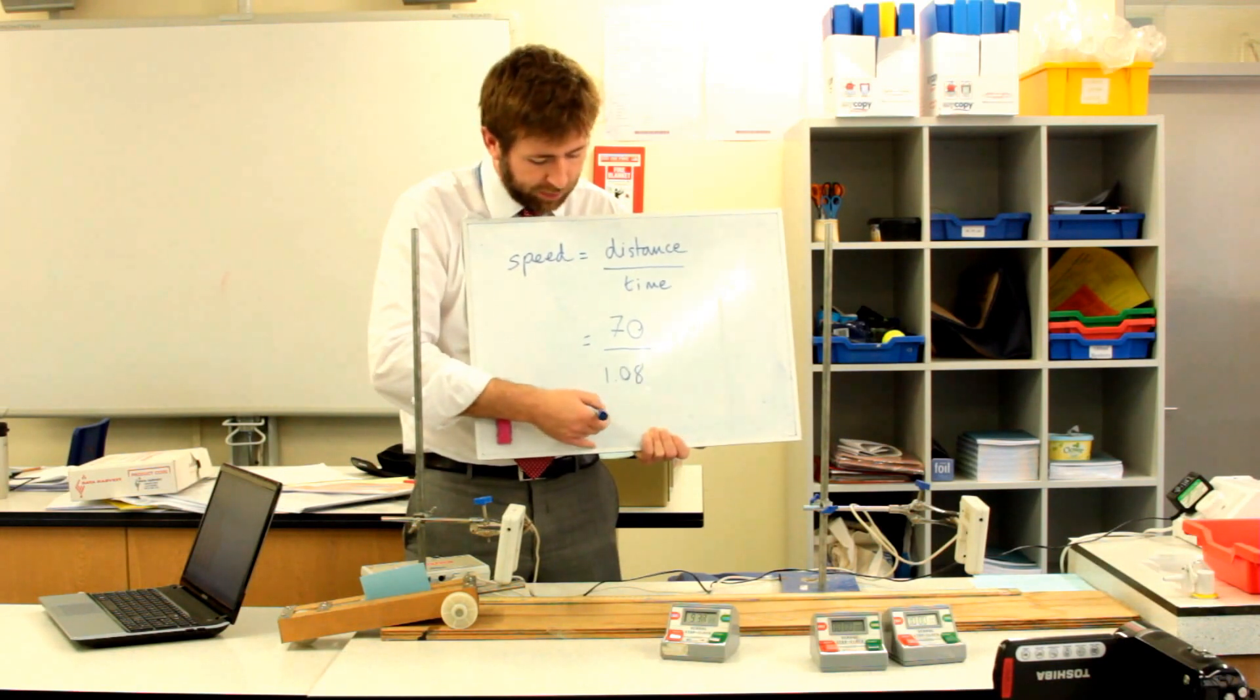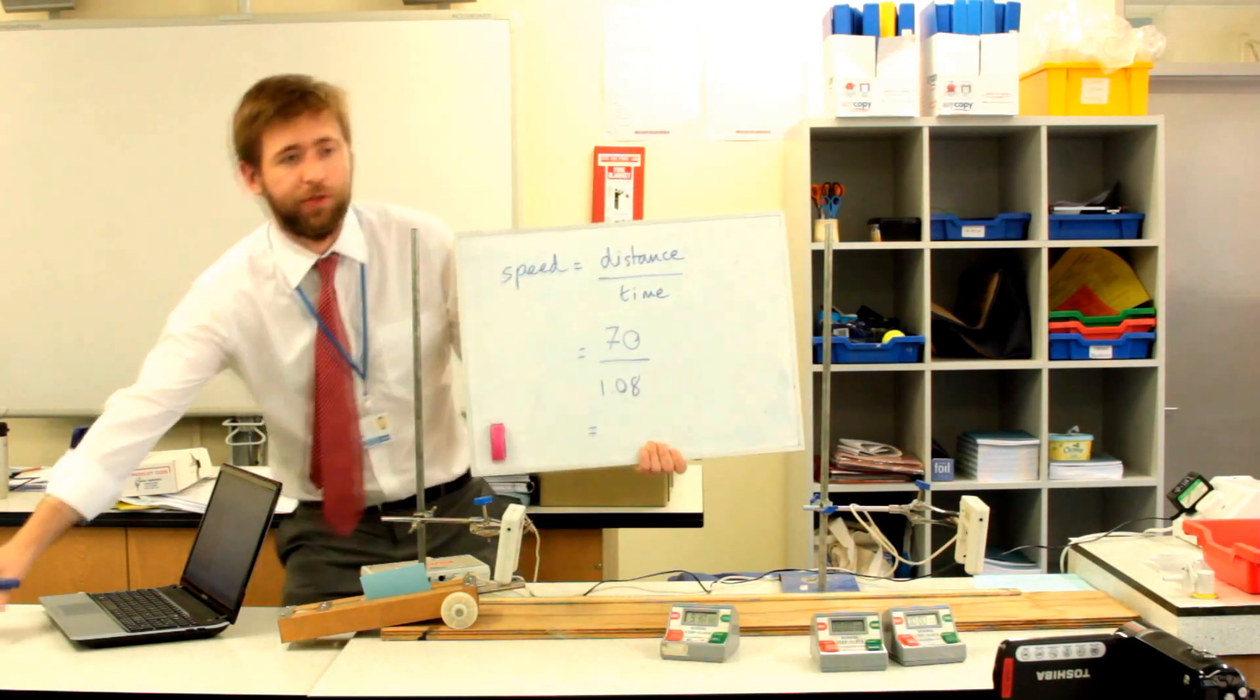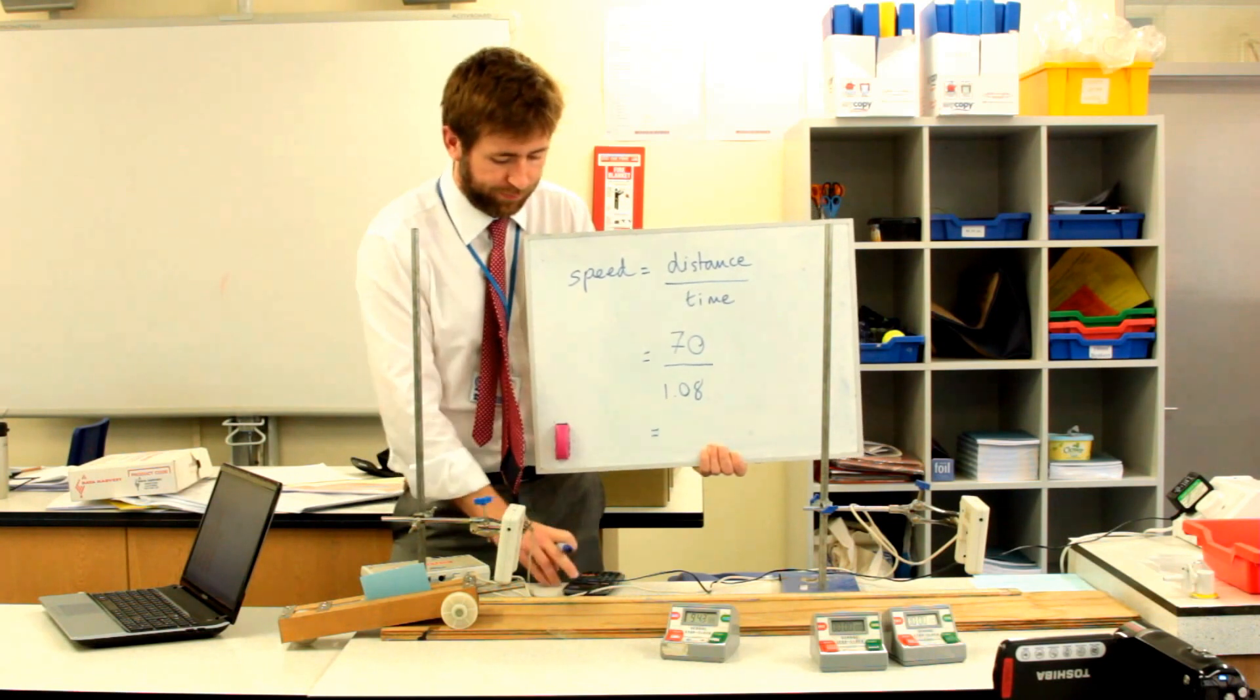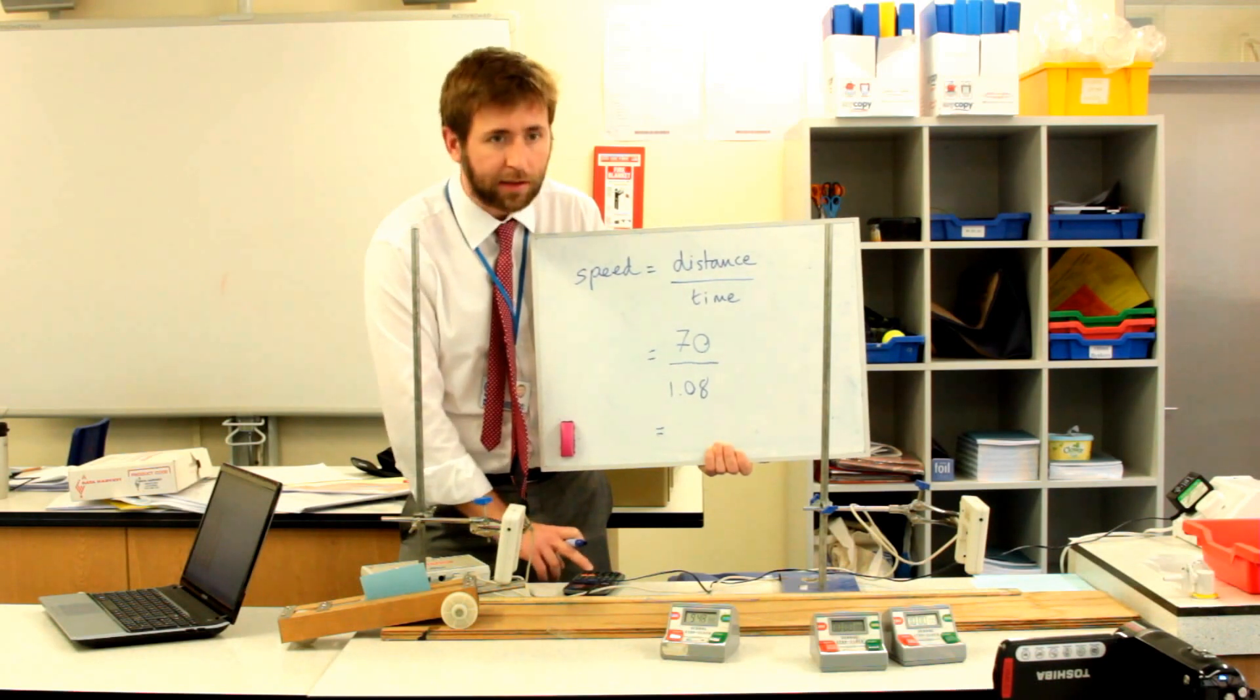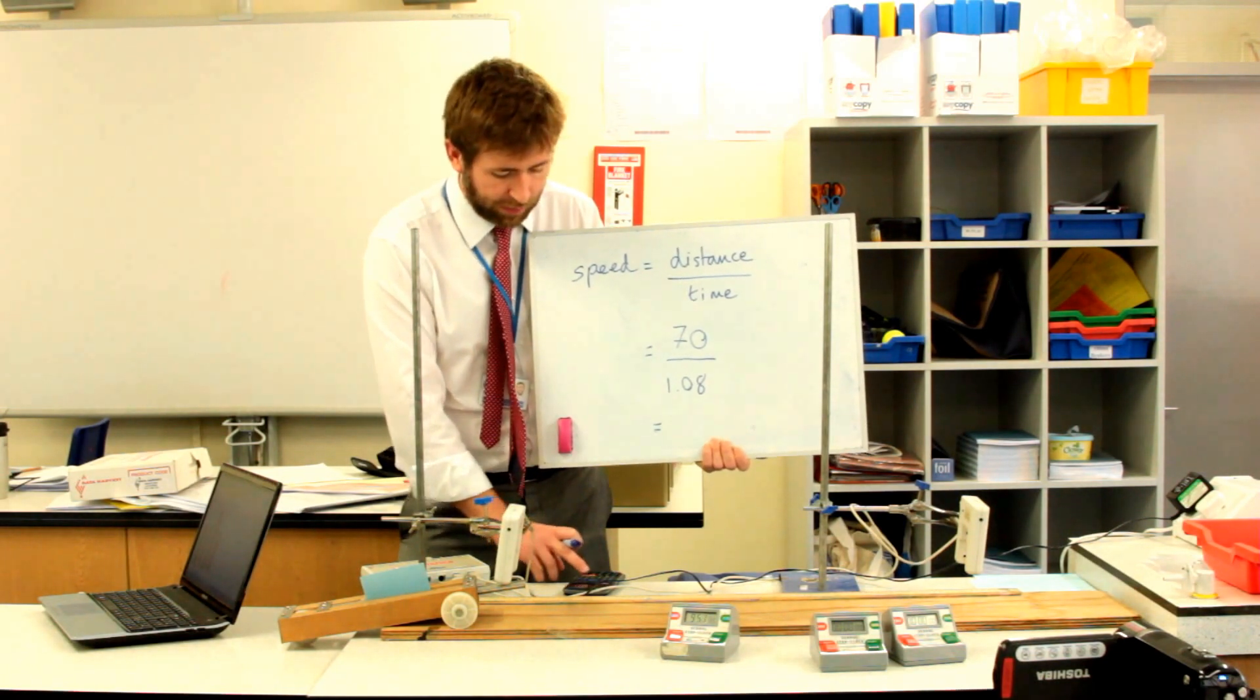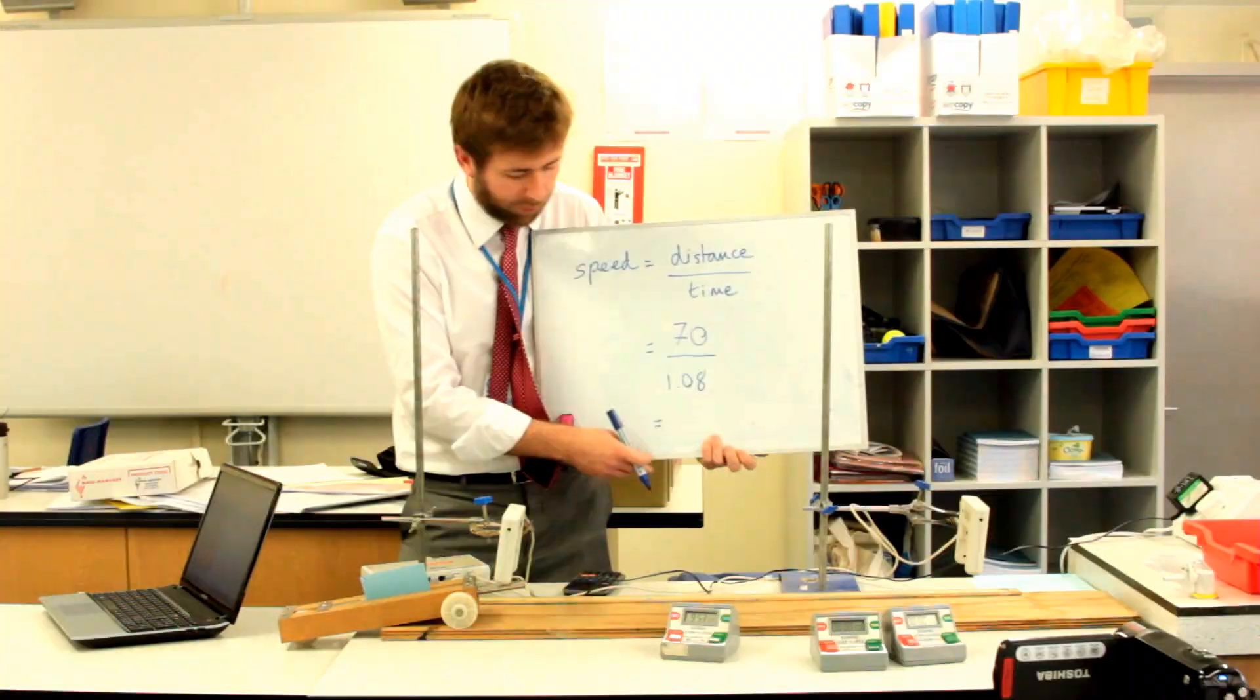Now I can go to the calculator. I wouldn't want to try and do that in my head. 70 divided by 1.08 seconds. 64.8.